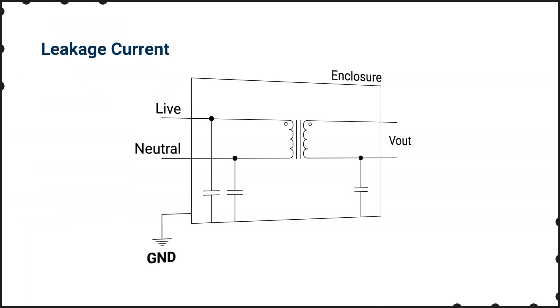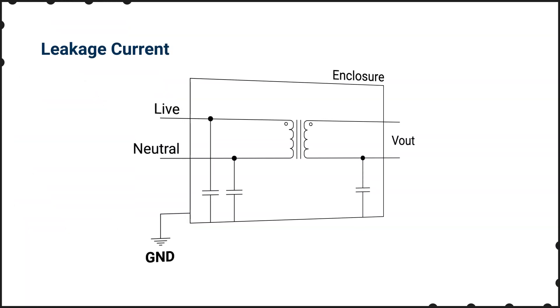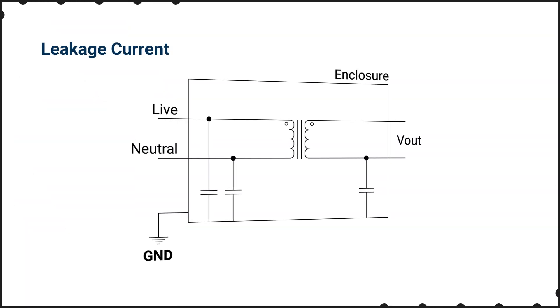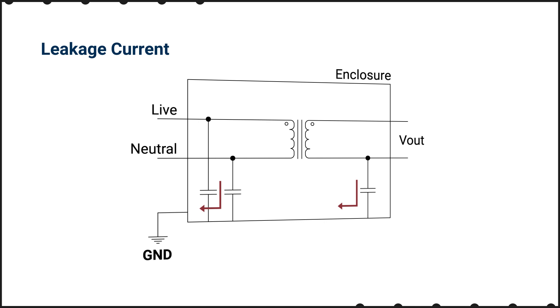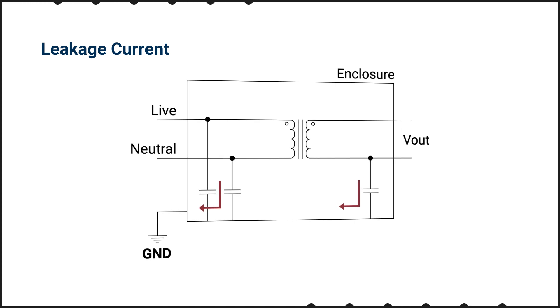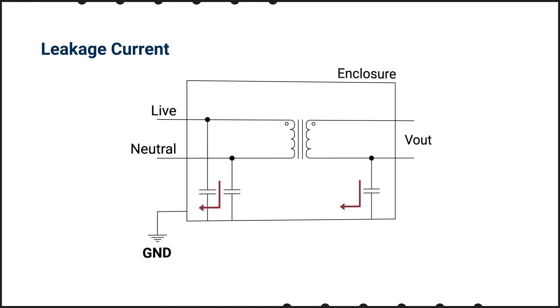Leakage current depends on the voltage on a conductor, the intentional and parasitic capacitive reactance between the conductor and earth, and the resistance between the conductor and earth.